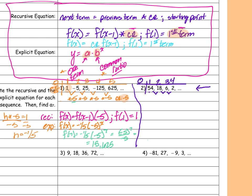If the sequence was going in the other direction it would be multiplying by 3, but since I'm going in this direction and getting smaller, I'm multiplying by one third. If I'm getting smaller, I'm multiplying by a fraction.